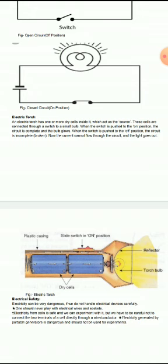act as the source. These cells are connected through a switch to a small bulb. When the switch is pushed to the on position, the circuit is complete and the bulb glows. When the switch is pushed to the off